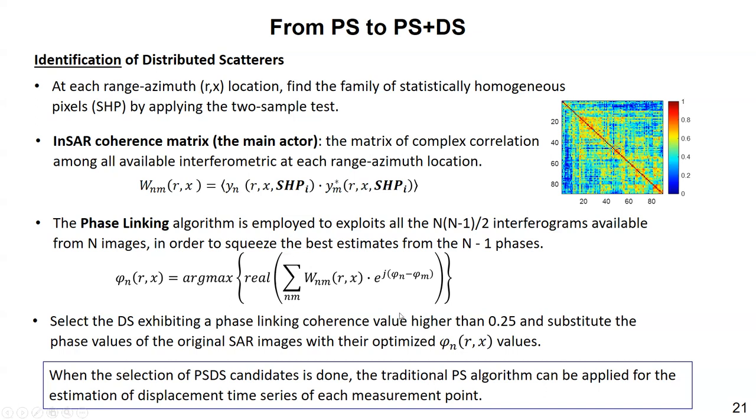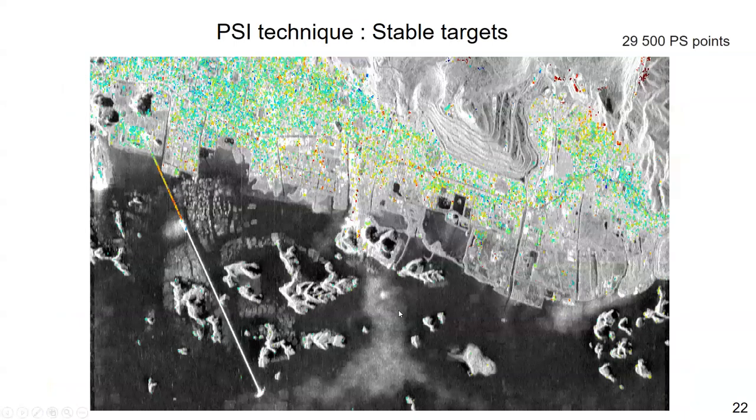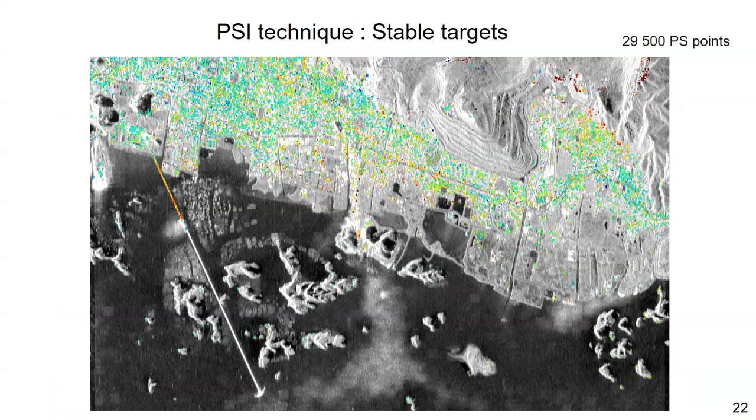And then the PS and the DS candidates can be selected. And whenever the DS is available, the classic SBAS algorithm can be applied to activate the displacement time series at its measurement point. So let's move to a demonstration. Here I'll show you an area in Cam Pha. That is now the site of one of the biggest coal mining in Vietnam, which has been exploited for almost a century, a hundred years.